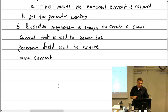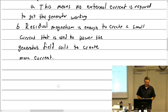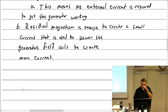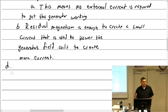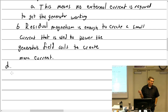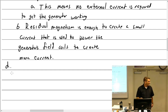What happens if you lose your residual magnetism — will the generator work? No. If you lose residual magnetism, or if it gets inverted so north becomes south and south becomes north, the generator won't work, and you have to flash it to get it excited again.